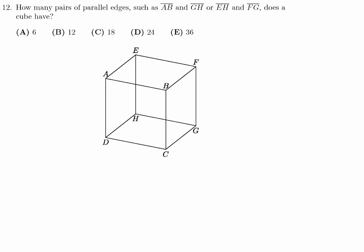How many pairs of parallel sides, such as AB and GH or EH and FG, does a cube have? Well, how many sides does a cube have? First of all, it has 12. So we can group them into groups of parallel sides.